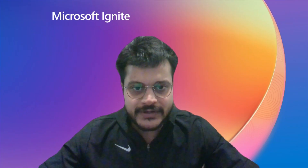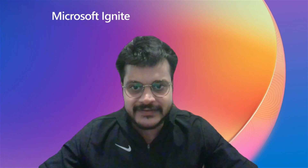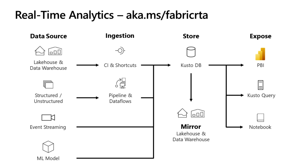Data ingestion is the process used to load data from one or more sources in real-time analytics in MS Fabric. Once ingested, the data becomes available for query. Kusto supports two modes of data ingestion: batching and streaming. Batching ingestion does data batching and is optimized for high ingestion throughput — this is the preferred and most performant type. Data is batched according to ingestion properties, and small batches are merged and optimized for fast query results. Streaming ingestion allows near real-time latency for small sets of data per table, initially ingested to row store then moved to column store extents.